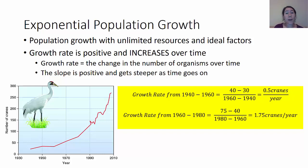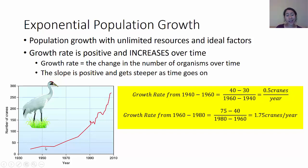When I talk about slope, I'm talking about the same slope you've been calculating in algebra: y2 minus y1 over x2 minus x1. For example, in 1940 there were about 30 cranes and in 1960 about 40 cranes. If I calculate that, I get about 0.5 cranes per year as the growth rate.